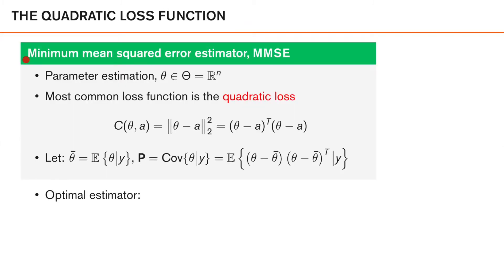The most commonly used loss function in estimation theory is the quadratic loss, which leads to the popular minimum mean squared error estimator, or MMSE estimator. Suppose that we have an estimation problem where we want to estimate a vector theta in R^n. A very common loss function in this setting is the quadratic loss.